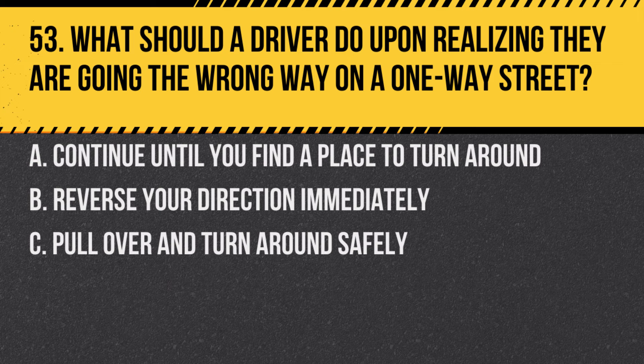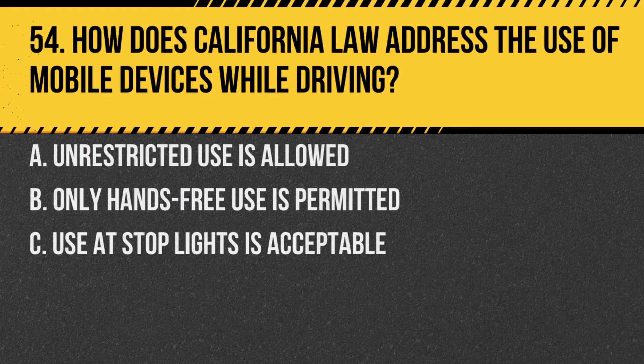Question 53. What should a driver do upon realizing they are going the wrong way on a one-way street? A. Continue until you find a place to turn around. B. Reverse your direction immediately. C. Pull over and turn around safely. Answer: C. Pull over and turn around safely. It's important to correct the mistake without endangering yourself or others.